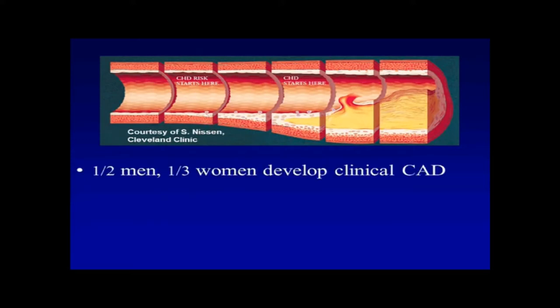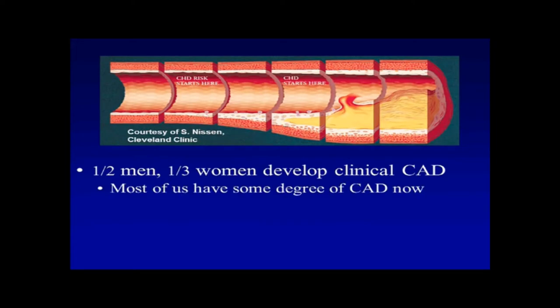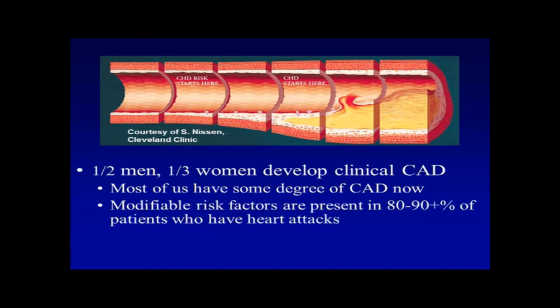Over time, the vessel can start off quite normal looking and then develop plaque. About one out of every two men and one out of every three women in the United States will develop clinical coronary disease. Most of us in this room have some degree of coronary artery disease already — it usually begins in the late teens and early 20s. Modifiable risk factors are present in usually over 80% of patients who have heart attacks, so the notion that heart attacks happen to people who have zero risk is really a fallacy.